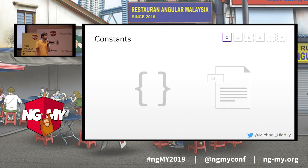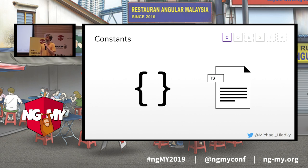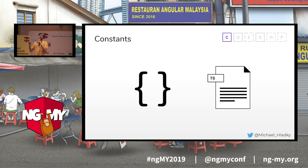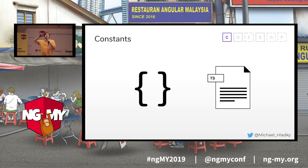Constants are pretty easy to understand. It's all the static stuff — a JSON object, a DOM element, something that you could, in best case, move into another file and store there.